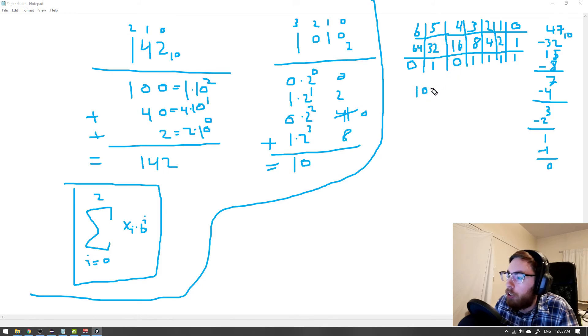So now we have actually converted 47 in the decimal system into its binary representation. 1, 0, 1, 1, 1, 1 in base 2.